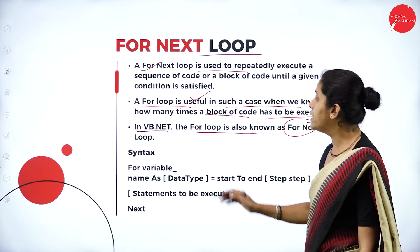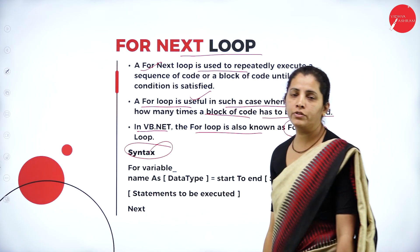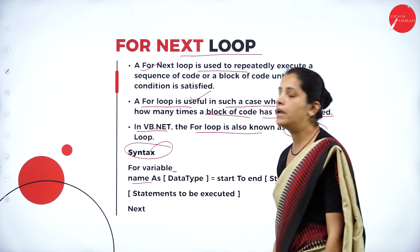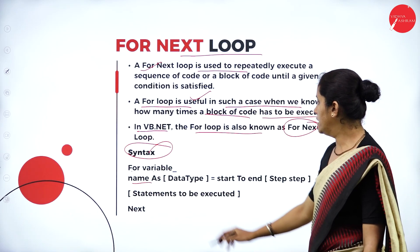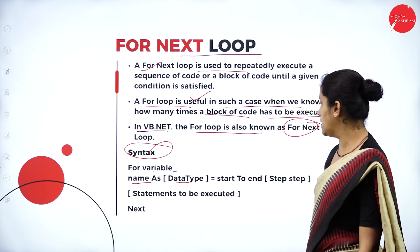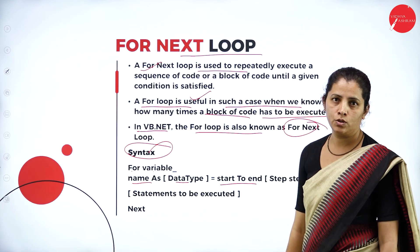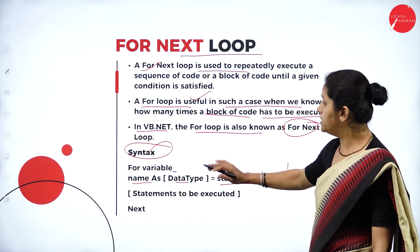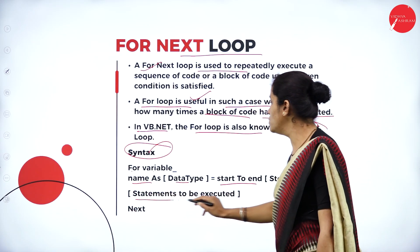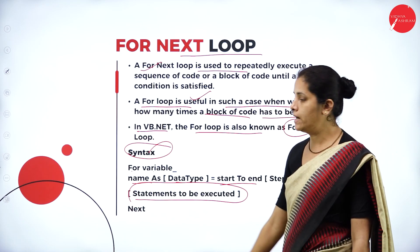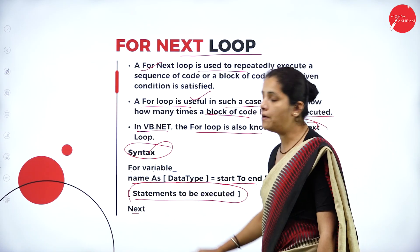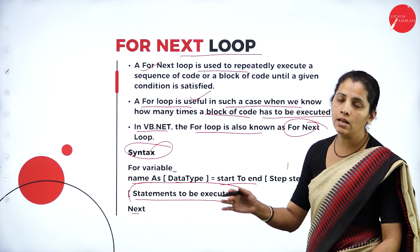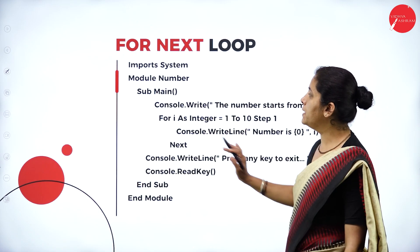The syntax of the for loop is: for variable_name as data_type = start to end step iteration. If the condition is true, I execute the statement. To increment, I use 'next' — which is a keyword — to repeat the process. Let's see a simple example.